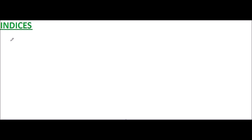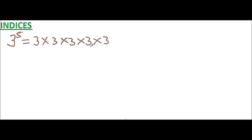We are going to look at what indices are. This may look like a new term, but if you are in secondary school, you have already used what is referred to as indices. We all know what 3 to the power 5 is. What it means is 3 multiplied by 3, multiplied by 3, multiplied by 3, multiplied by 3 — that is 3 multiplied by itself 5 times. We refer to 5 as the power, and we read this as 3 to power 5.